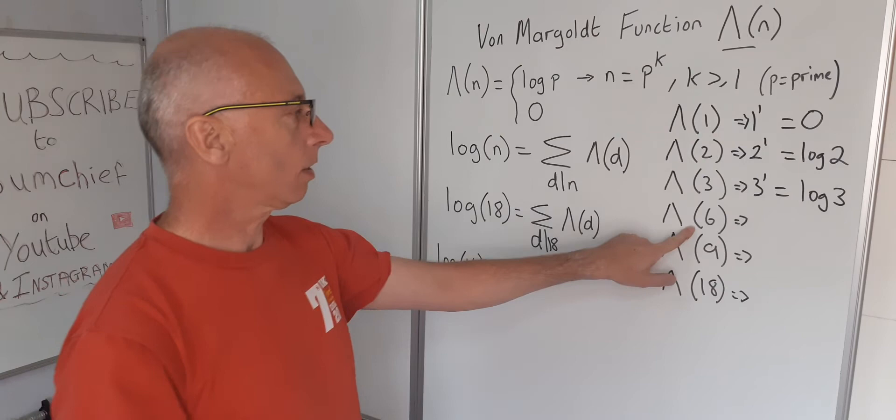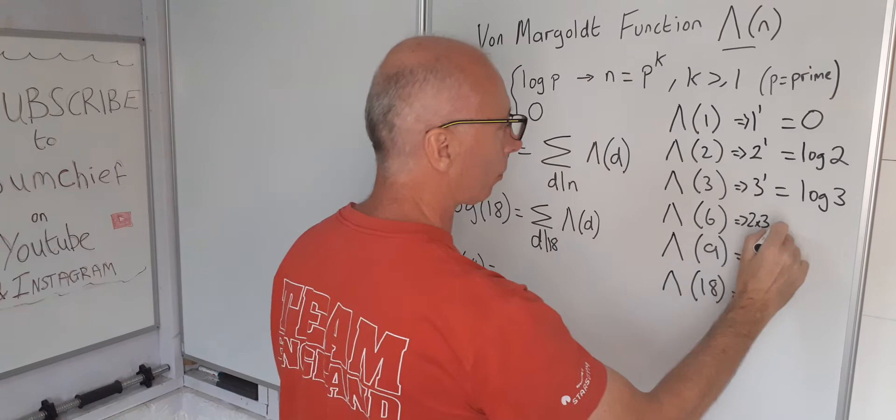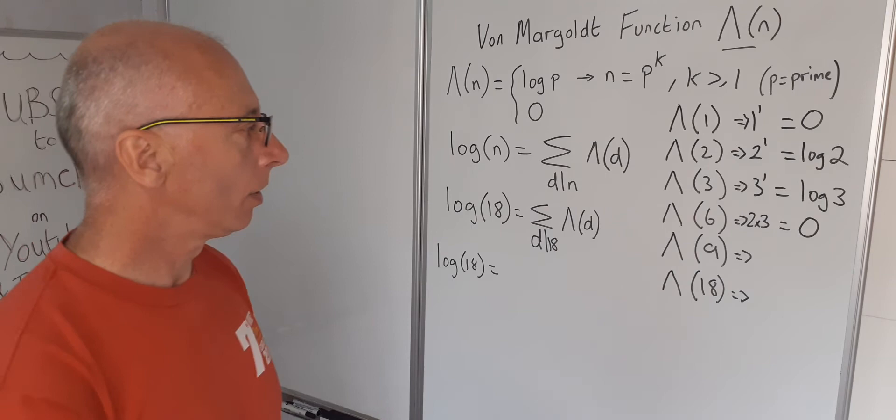6 is 2 times 3. So we can't get n to equal P to the power of k in any way shape or form here, so in which case that would take on the value 0.